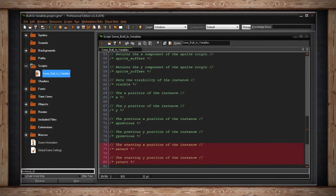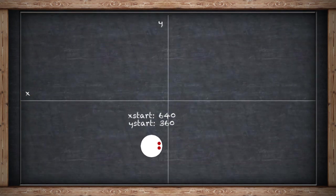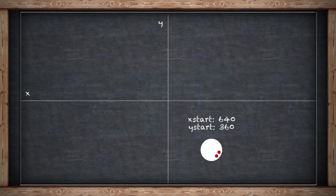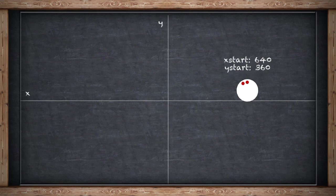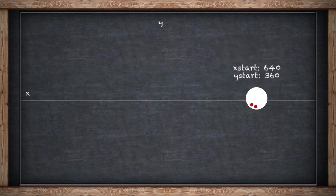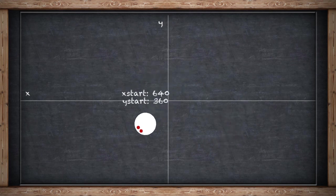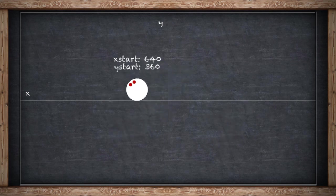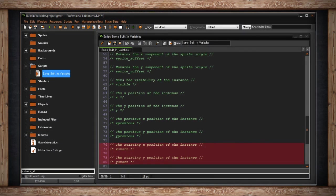The last two built-in variables are XStart and YStart — the starting X and Y position of an instance. Right when the instance is created and the room starts, wherever your instance is, that's the XStart and YStart. It's not just a read value — it's also write. You can set XStart and YStart to a particular value, and that's where your instance will start when the room begins. This is useful if you want to put your instances back to where they started at any time during your game.